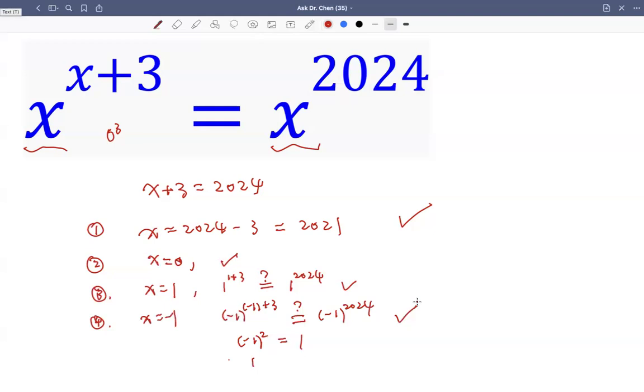So you see, this equation has 4 solutions: 2021, 0, 1, and negative 1. Sometimes it's very easy to miss solutions.